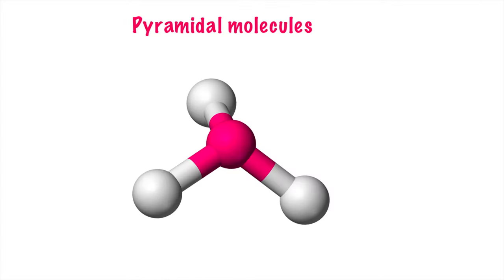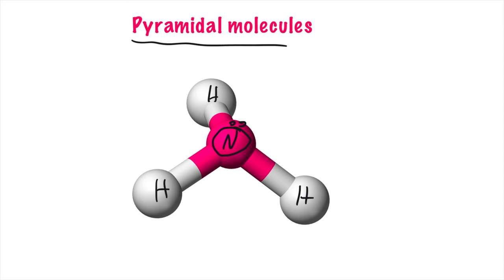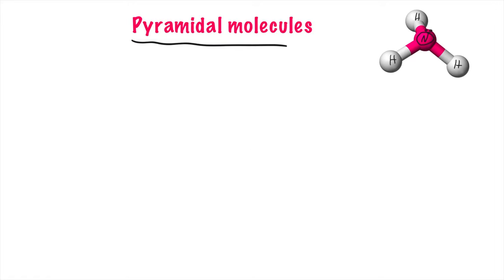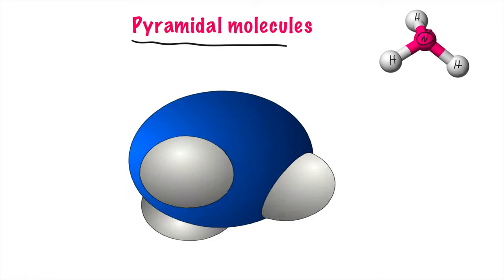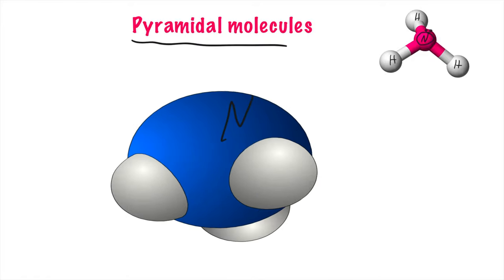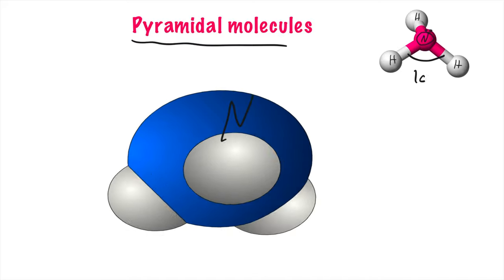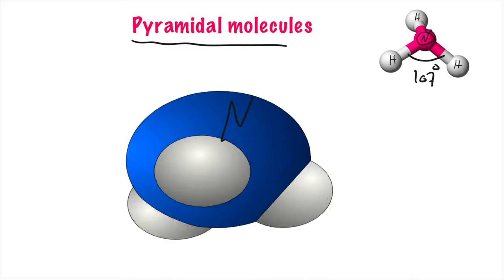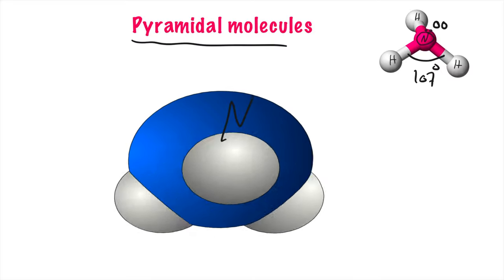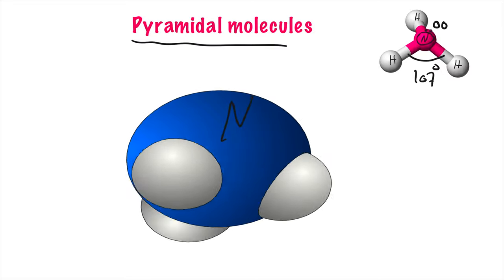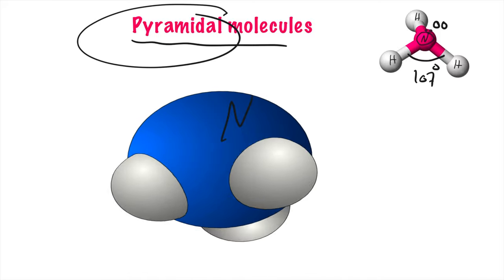For molecules like ammonia, where you have four atoms in total with a central atom like nitrogen that does have unshared electrons, the shape is not going to be trigonal planar. Because the central atom has unshared electrons, the overall shape is going to be trigonal pyramidal. In these molecules, you always have a central atom with unshared electrons — like nitrogen or phosphorus — and three atoms around it. The angle is 107 degrees. The lone electrons have reduced the angle from 120 degrees in trigonal planar to 107 degrees in trigonal pyramidal.